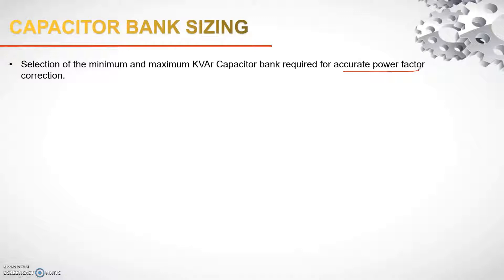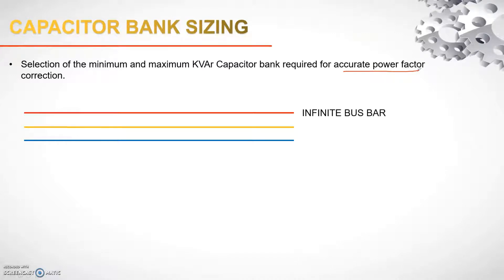We will be considering unity as the expected power factor. Let us quickly understand how capacitors are connected to the bus bar. I have an infinite bus bar — for those unfamiliar with the term, it is basically a bus bar whose voltage and frequency are constant and cannot be changed.